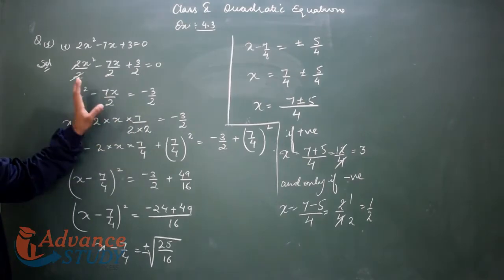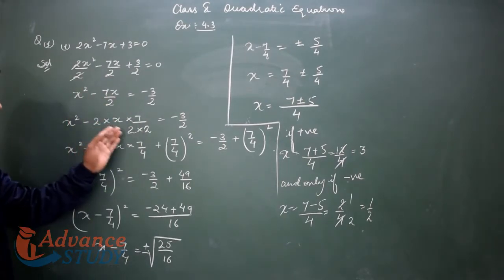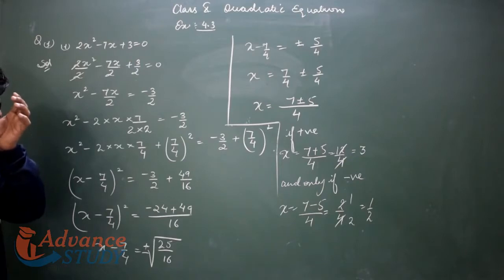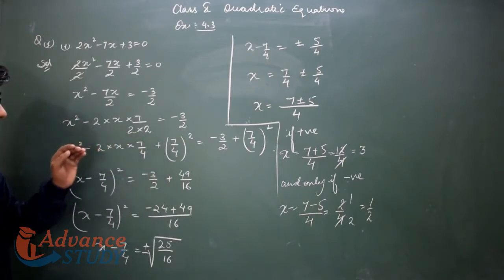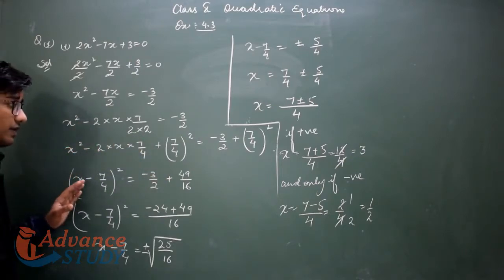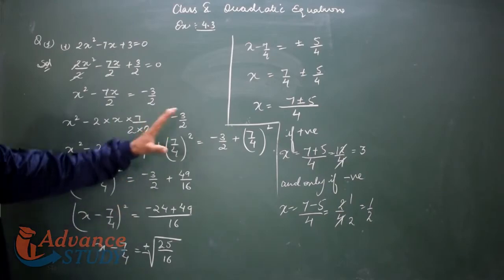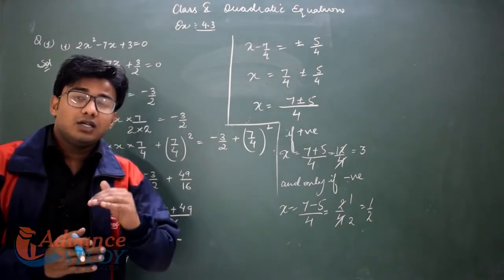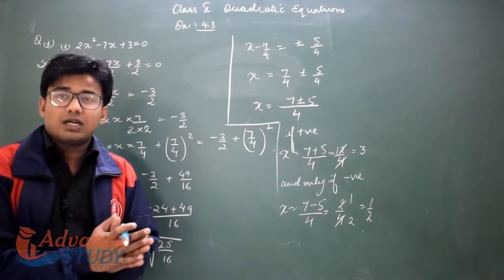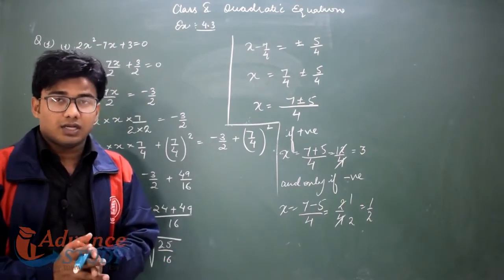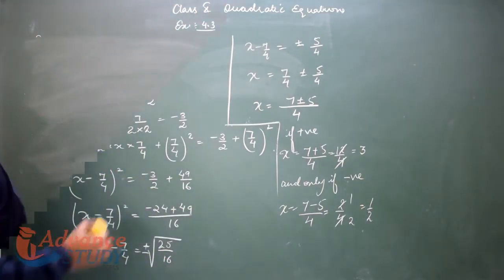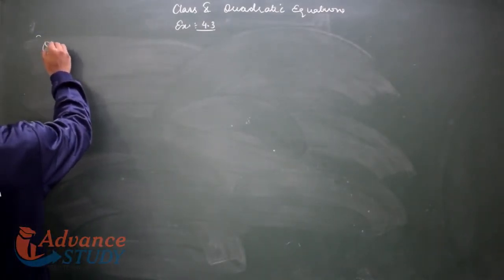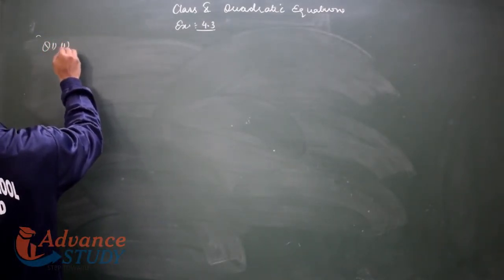To summarize: first we divided by 2, then after dividing we applied 2 on the numerator and denominator. Then we added 7 upon 4 to both sides, then took LCM. The key steps are: multiply 2 from your side, and find b². Now let's do question number 2 quickly — question number one, second part.